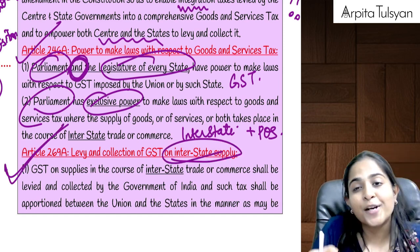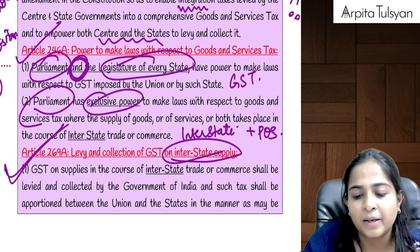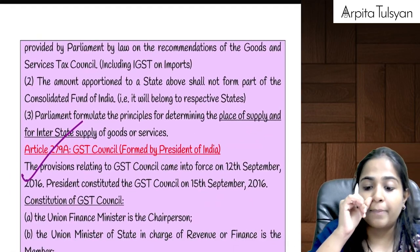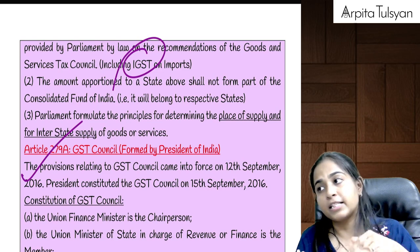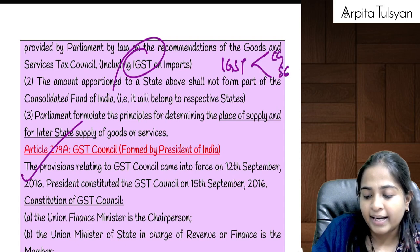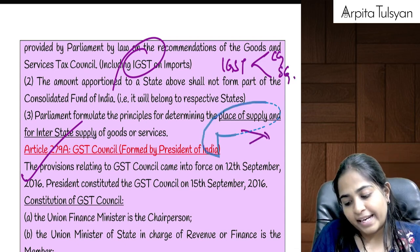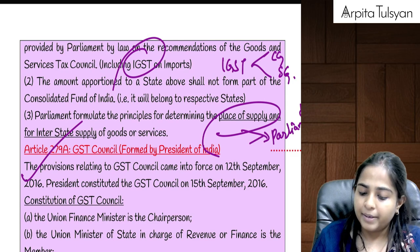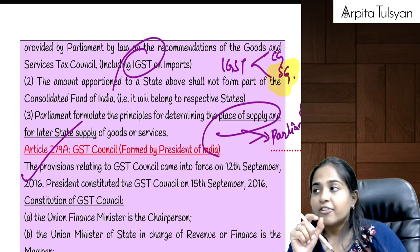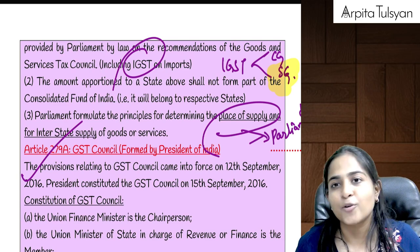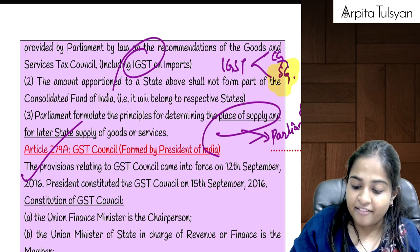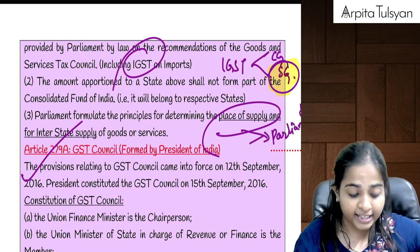Article 269A was totally talking about interstate supply. For interstate supply, only the Central Government or Parliament has the power to make the laws. In case of interstate supply, IGST will be applicable, including imports — imports were also considered as interstate supply. Whatever IGST is collected will then be apportioned between the Central Government and the State. Any matters relating to place of supply will also be determined by the Parliament. And importantly, the portion of IGST apportioned to the State Government will not get transferred to the Consolidated Fund of India — because this is the revenue of the State Government.